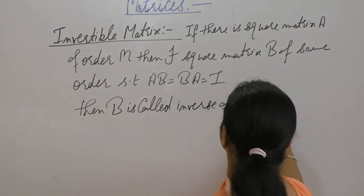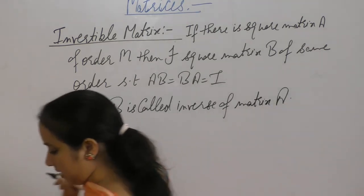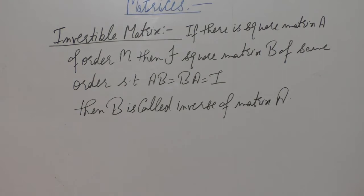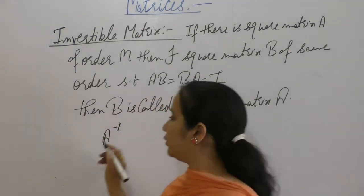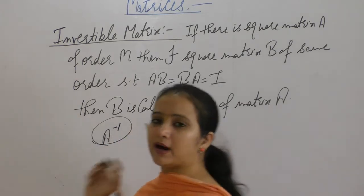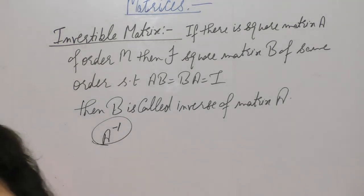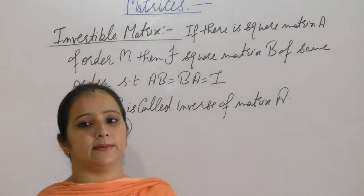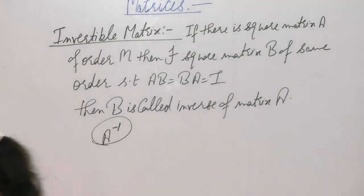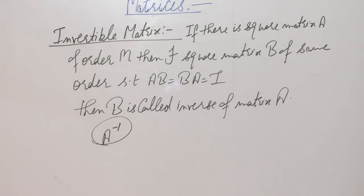B is called inverse of matrix A and it is denoted by A inverse. We denote A inverse by A power minus 1. In this case A is said to be invertible.